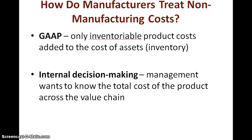All this time we've only been looking at manufacturing costs. How do manufacturers treat non-manufacturing costs? For internal decision-making, management will want to know the total cost of the product across the value chain. They need to attach all costs incurred in the other elements of the value chain to find a total cost of product, so they can add a markup to cover those costs and sell the product at a profit.